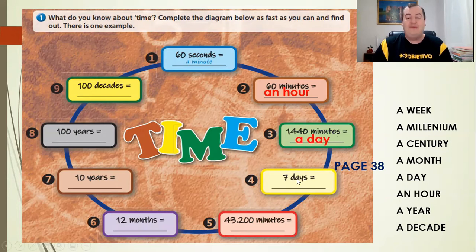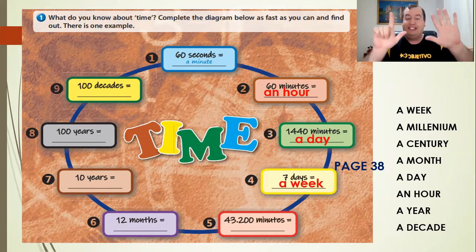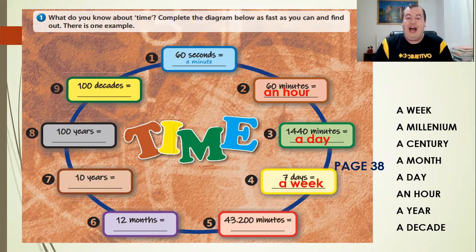One day has 1,440 minutes. Now, let's go to number four. And what about seven days? What is the best answer for seven days? Aha, a week, okay? So, Sunday, Monday, Tuesday, Wednesday, Thursday, Friday, Saturday, seven days, we have a week or one week.